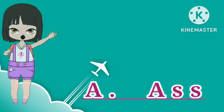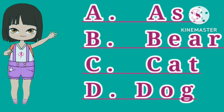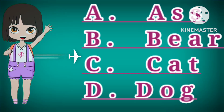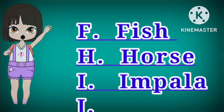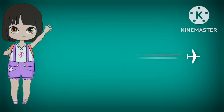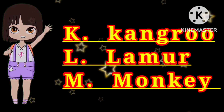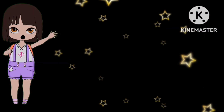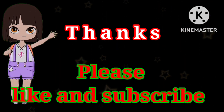Today we have learnt animal names. These are: bear, cat, dog, fish, horse, impala, jaguar, kangaroo, lemur, and monkey. See you in the next video. Please like and subscribe to my channel.